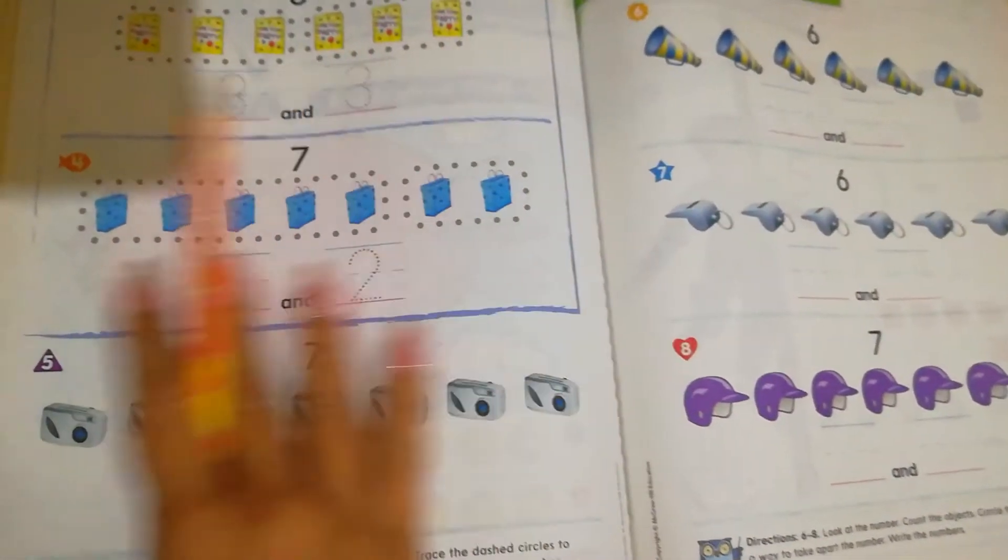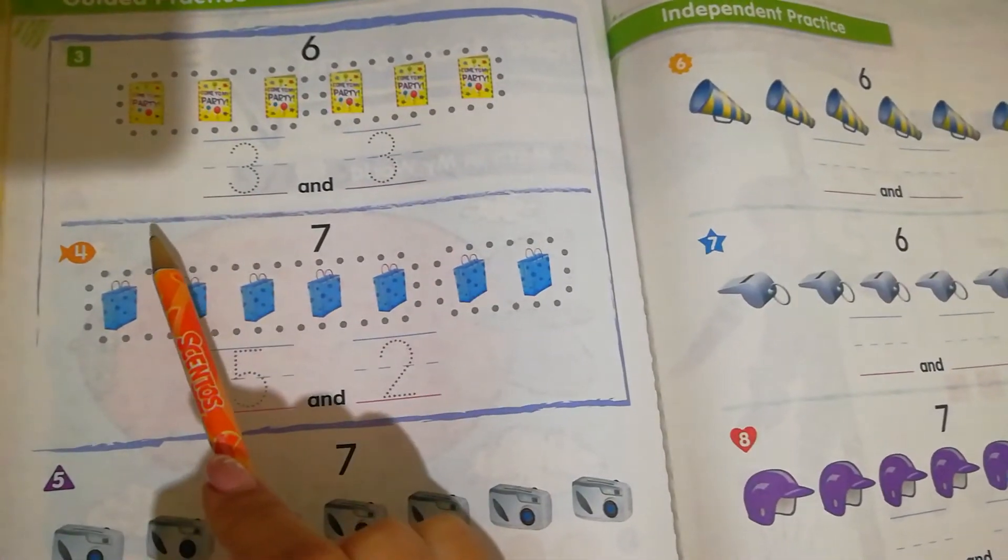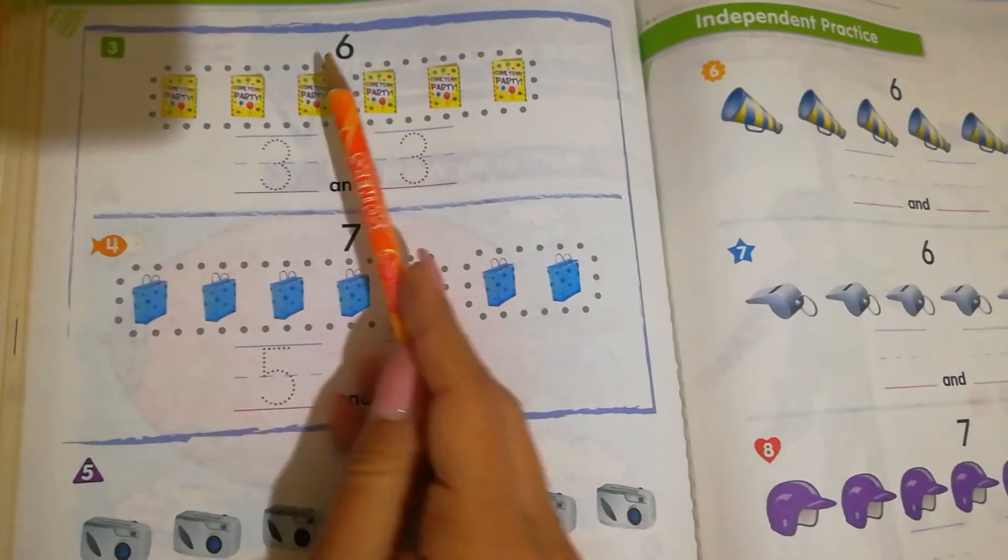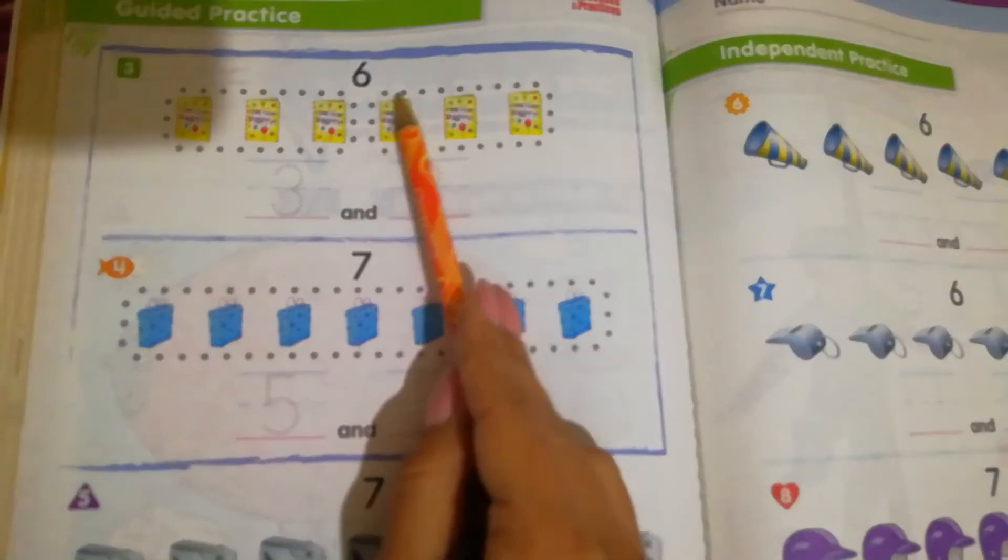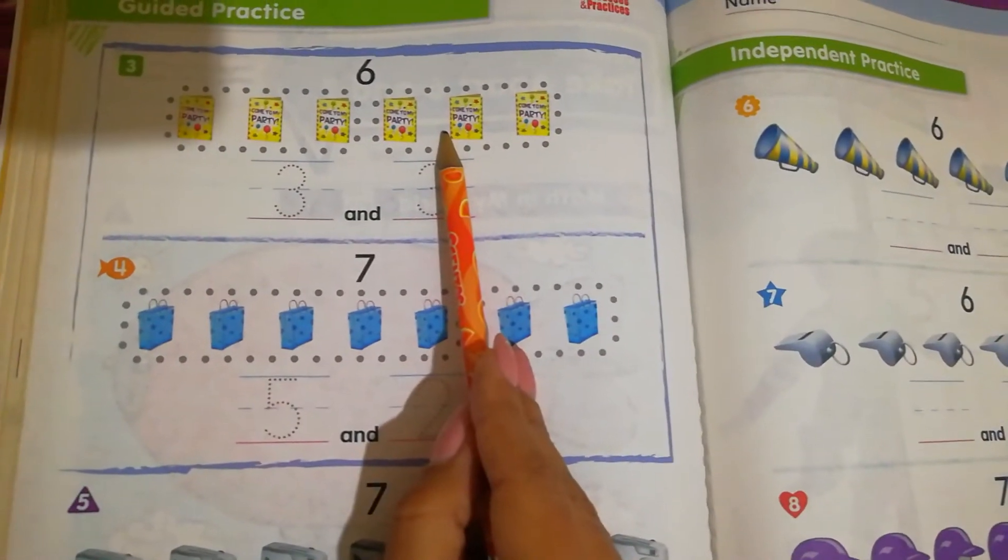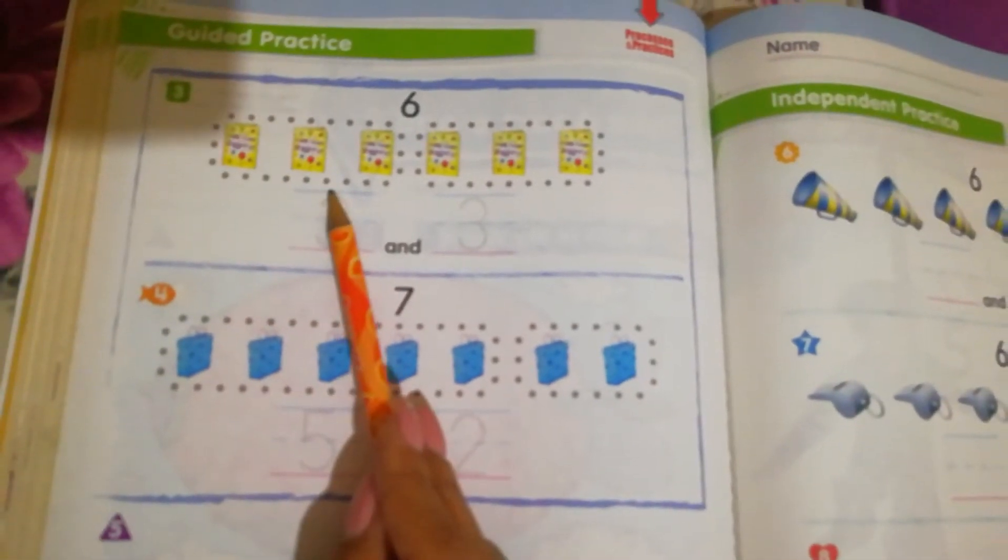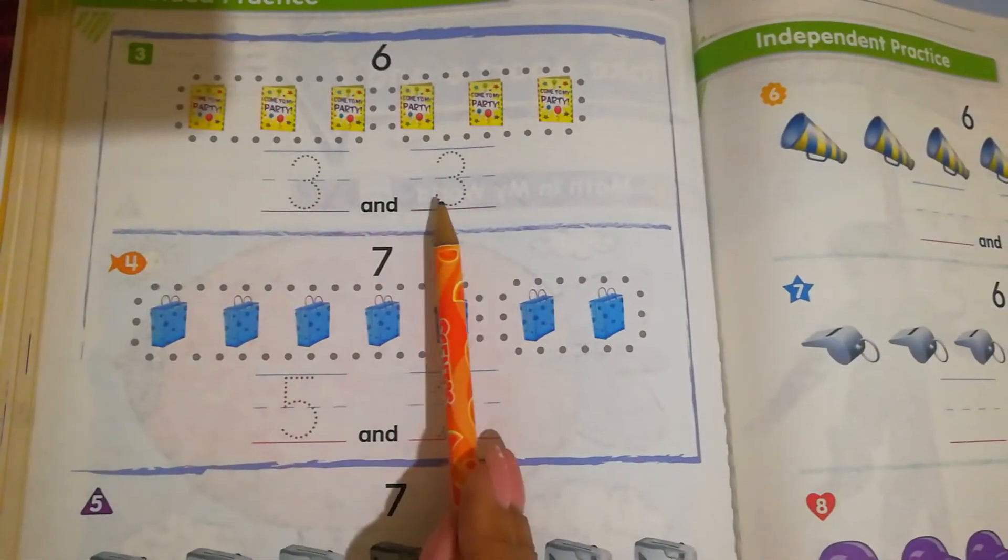If we have six objects, how can we take them apart and put them into two different groups? If we take three and put them in the first group, we can put another three in the second, and all together make six. So we can take apart six with three and three.